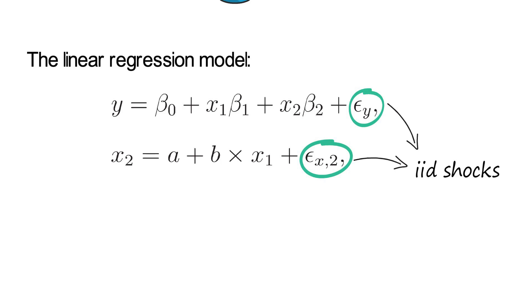So you clearly see that x2 is a linear function of x1 plus some noise, and x1 and x2 are both useful for predicting y in a linear fashion.